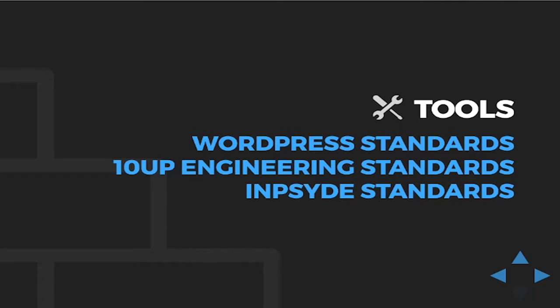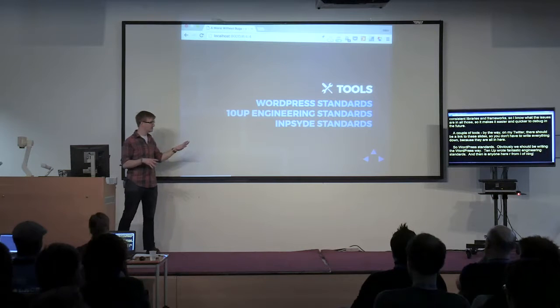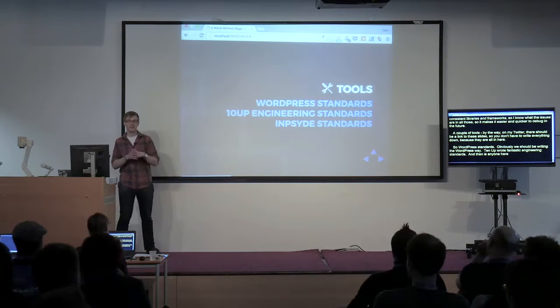There's a link to these slides on my Twitter, so you don't have to write everything down. For tools: WordPress standards — we should be writing code the WordPress way for WordPress sites. And 10Up wrote spectacular engineering standards definitely worth checking out and perhaps adopting. And there's another company — Imside — they have a really fantastic set of standards as well. So in addition to 10Up and WordPress, worth checking out.